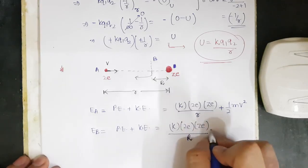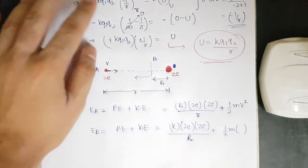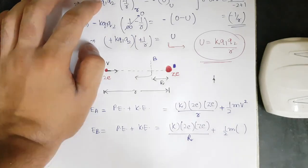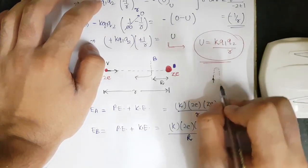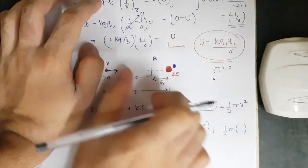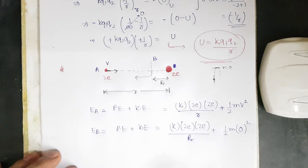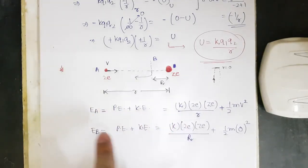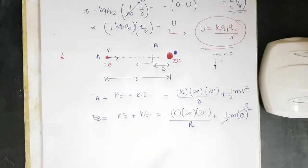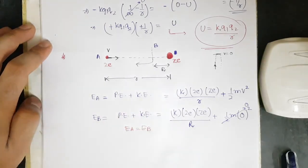At the closest approach point B, the velocity of the alpha particle is zero — analogous to a projectile thrown upward reaching its highest point with zero velocity before returning. So the kinetic energy term at B is zero. Since there is no non-conservative force, this is a non-dissipative field and energy is conserved, meaning the total energy at point A equals the total energy at point B.